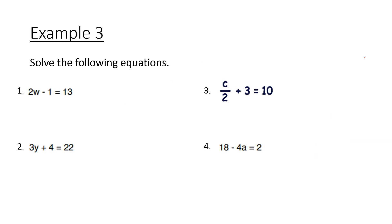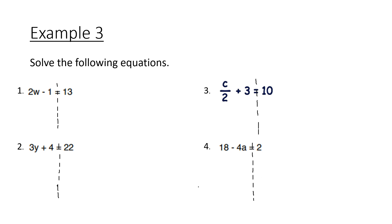Now we're going to use a method that doesn't require a function machine, which you've looked at when solving one-step equations. This is when you draw your road markings. Remember to copy out these examples so that you have them in your book — if you ever need help, you can look back at them.